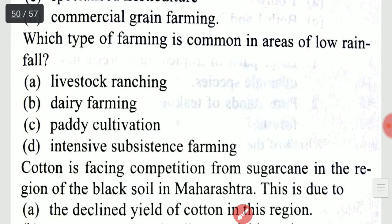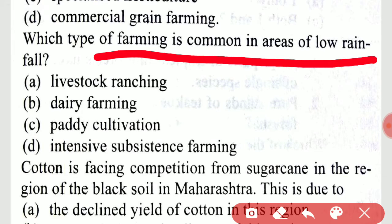Which type of farming is common in areas of low rainfall? It is option A, livestock ranching.